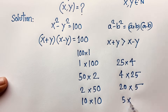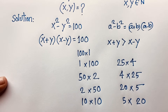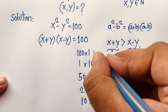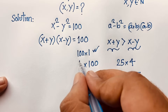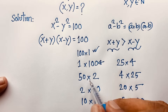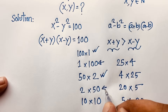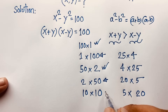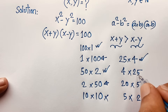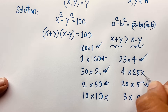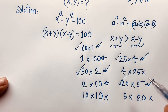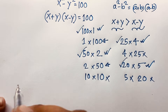And 20 times 5, or 5 times 20. Since x plus y must be greater than x minus y, we reject cases where the first factor is smaller than the second, or where both factors are equal (like 10 times 10). We are left with four valid cases.